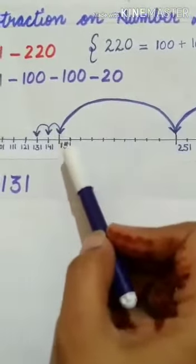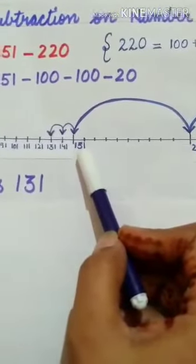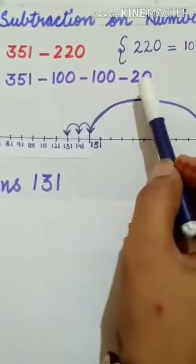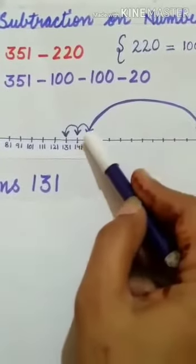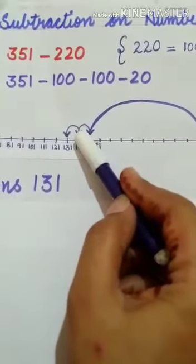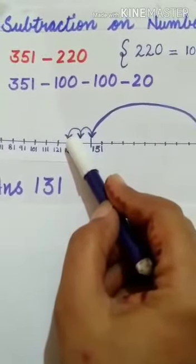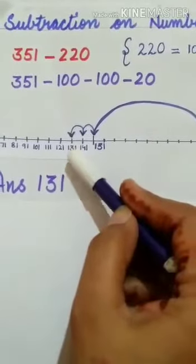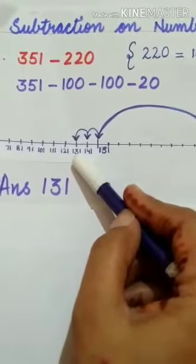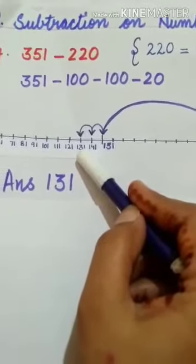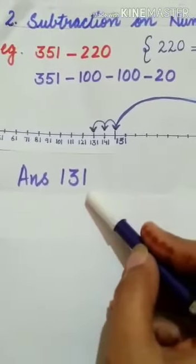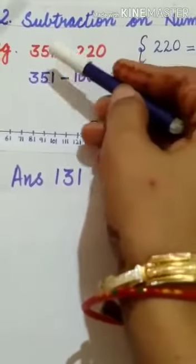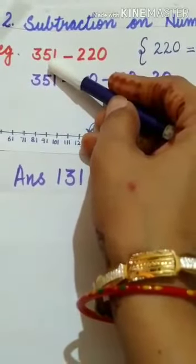Again we are subtracting 100 here, so again move 100 steps back from 251. We land on 151. Now how much is left? 20 is left. For this, move 10 and then again 10 steps. So 151, then 141, and then finally we reach 131. Our answer is 131 after subtracting 220 from 351.